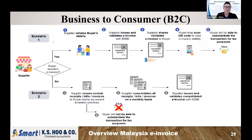So in the B2C scenario, when the customer is a consumer, they might or might not require an e-invoice. If your consumer buyer requires e-invoice, you need to collect all the details from your buyer, issue the e-invoice, submit to income tax for approval, and only after that can you give your customer the validated invoice. If your customer does not require e-invoice, you can still issue a normal invoice, normal receipt, or normal bill.